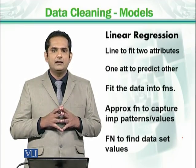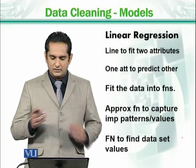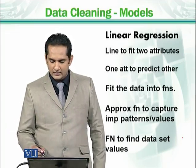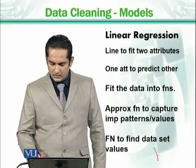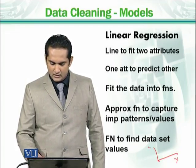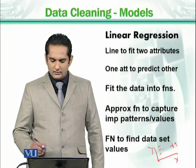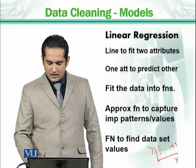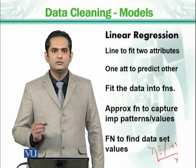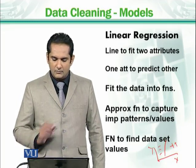We try to make a line which fits two attributes. Let's say we have two attributes, x and y, and we have some data points here and some data points there. If we can draw these data points, we can draw a line. That line basically differentiates these points from the others.